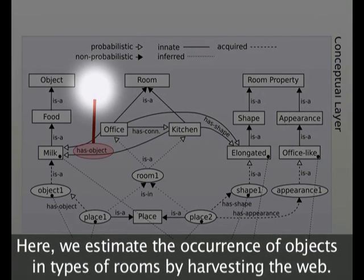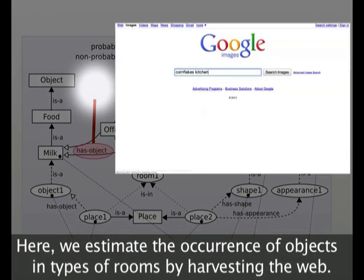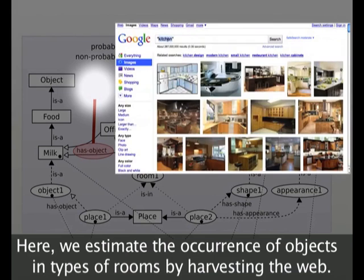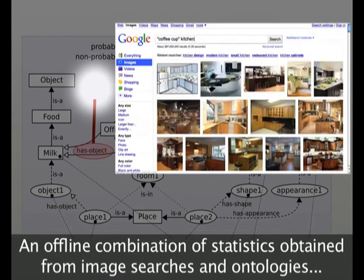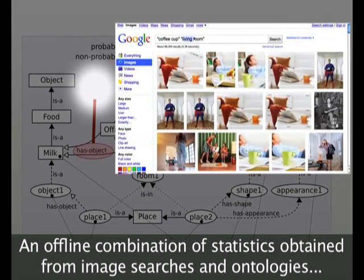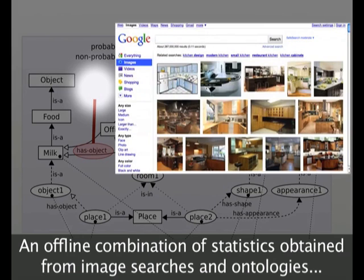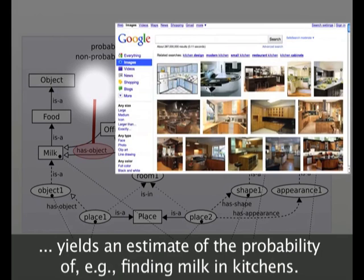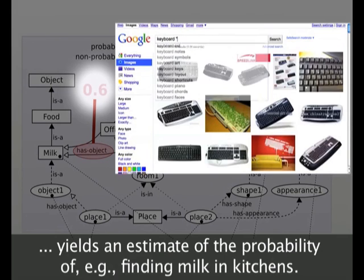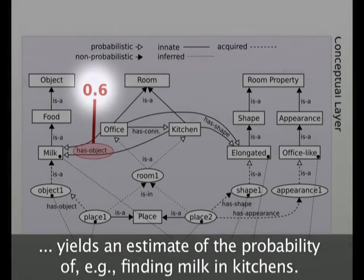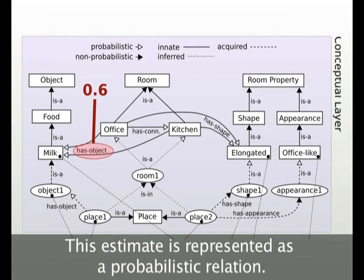Here, we estimate the occurrence of objects in types of rooms by harvesting the web. An offline combination of statistics obtained from image searches and ontologies yields an estimate of the probability of, for example, finding milk in kitchens. This estimate is represented as a probabilistic relation.